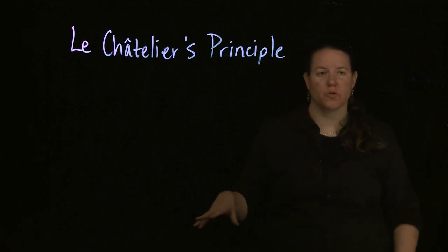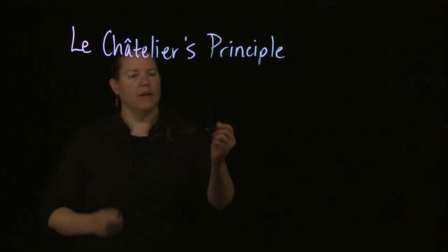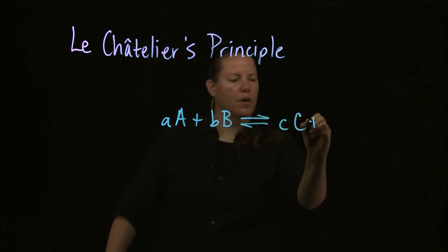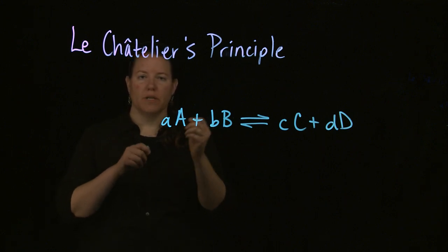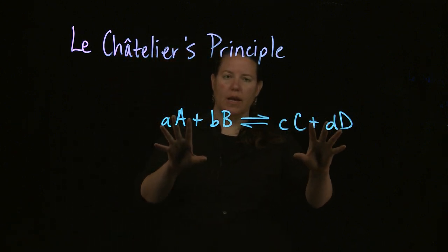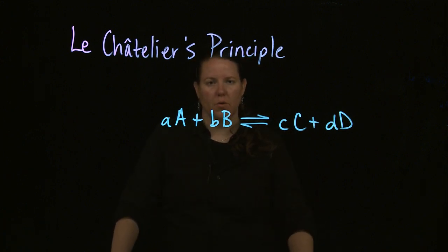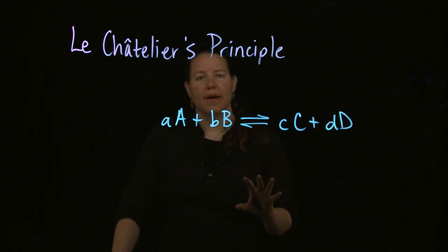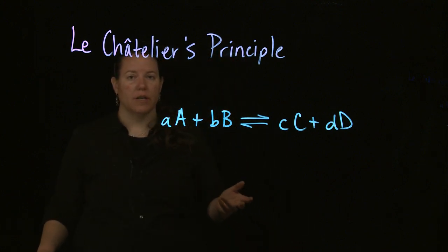Basically what Le Chatelier's principle says is that if a system is already at dynamic equilibrium — with reactants and products represented by capital letters and lowercase letters for coefficients — and if the system is perturbed or disrupted in some way, then the entire system is going to compensate by shifting. We talk about shifts a lot: it shifts to the left, it shifts to the right, it shifts to products, it shifts to reactants.